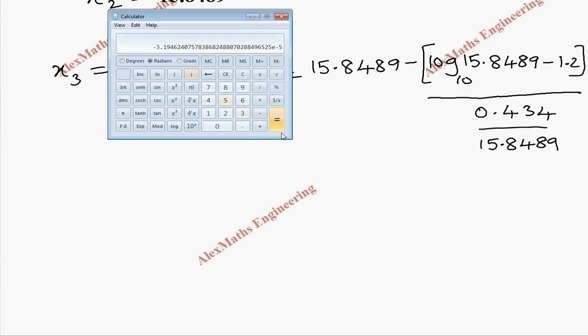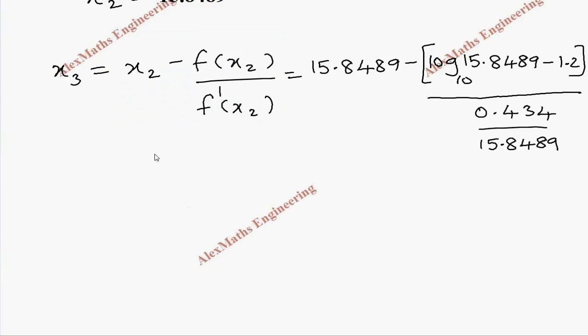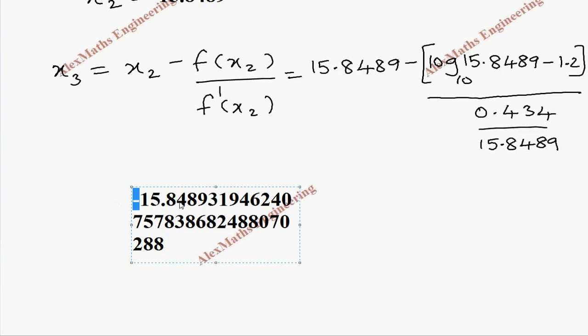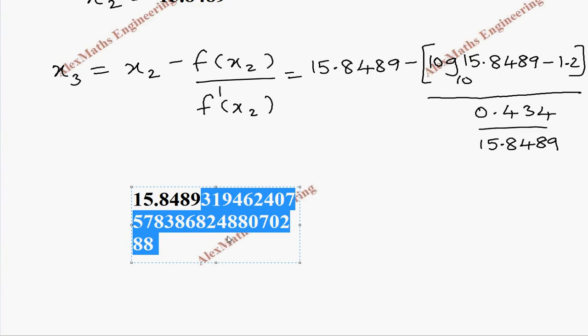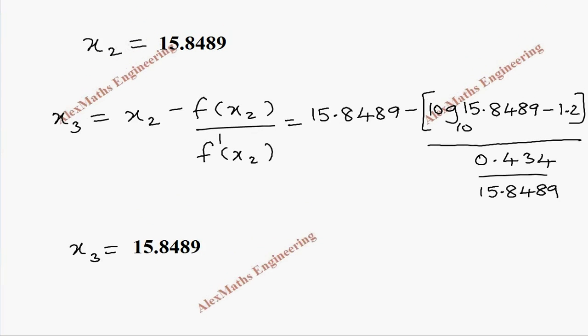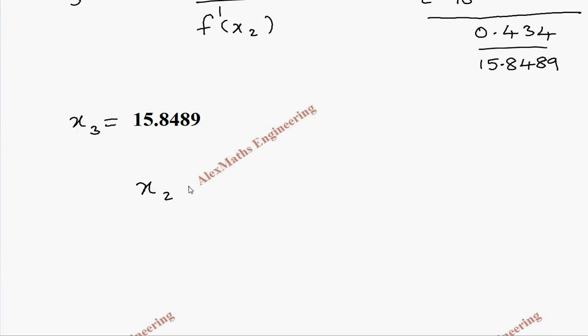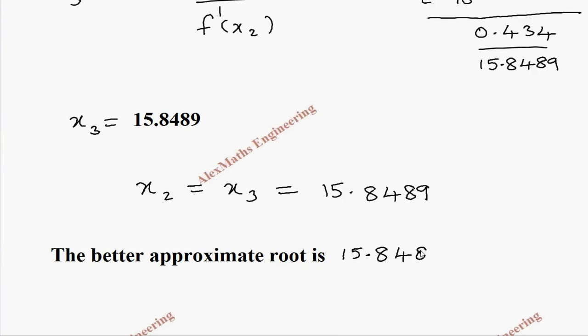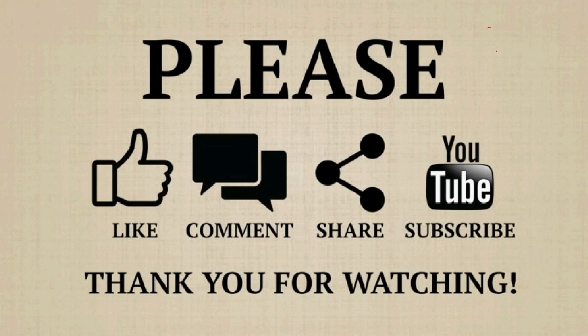Then bracket close, and we have to subtract this value from 15.8489, but I am doing the opposite, so minus 15.8489. Since I have done the opposite, I have to ignore the minus sign and take the remaining numbers, rounding up to four decimal places. So we are once again getting the same value. This is our x_3: 15.8489. Even x_2 is also 15.8489. So we get x_2 equal to x_3 equal to 15.8489. You can say the better approximate root is 15.8489.